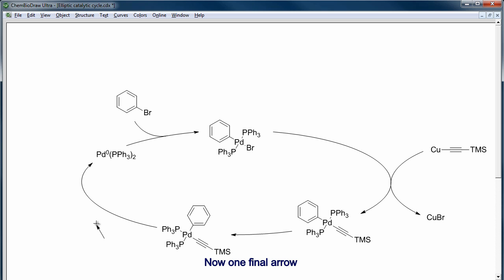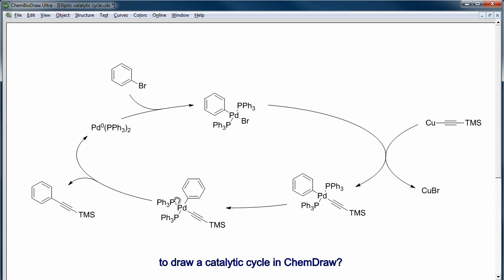Now one final arrow that I am going to curve, position, and adjust the length. And the product of the reaction that I drew by duplicating, adding a triple bond and some TMS. Et voila! Who said it was difficult to draw a catalytic cycle in ChemDraw?